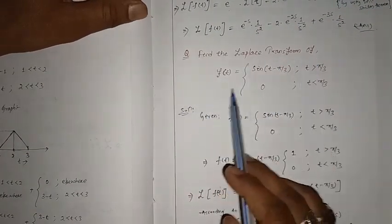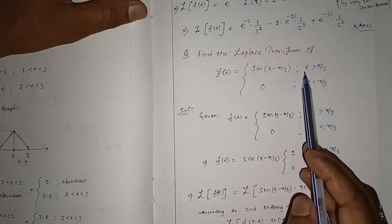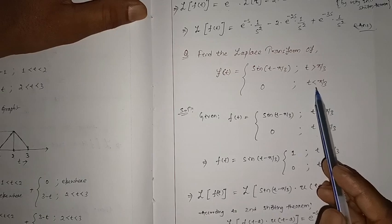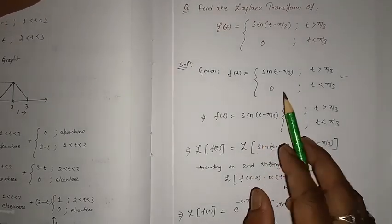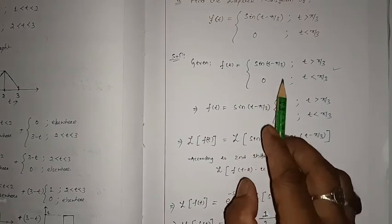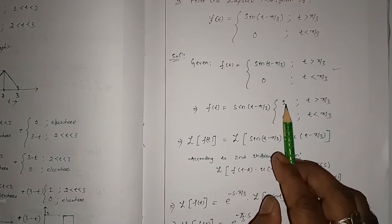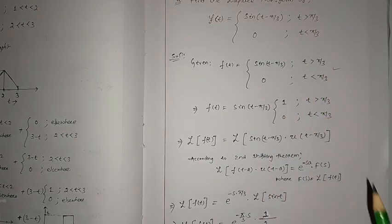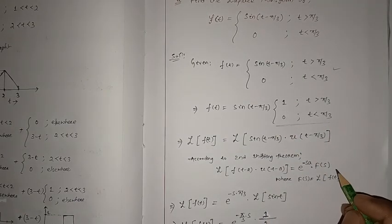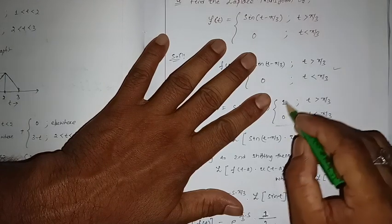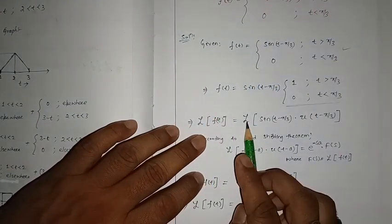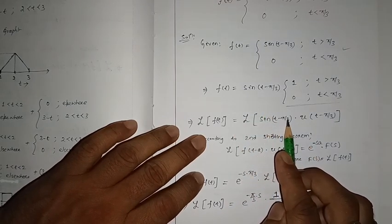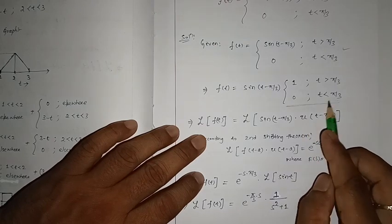The next problem: find the Laplace transform of f(t) equals sin(t minus π/3) when t is greater than π/3, and 0 when t is less than π/3. The given function can be represented as sin(t minus π/3) times the unit step function u(t minus π/3), since the value is 1 when t is greater than π/3 and 0 otherwise.